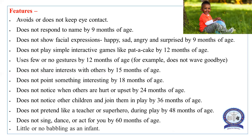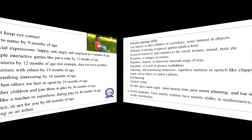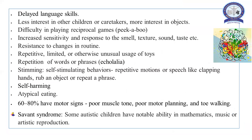By age 18 months, the child does not find or point to something of interest. By age two years, the child does not notice when others are hurt or upset. By age 36 months, the child does not notice other children or join them for play. By age 48 months, the child does not pretend to be a teacher or superhero during play. By age five years (60 months), the child cannot sing, dance, or act in drama. These are signs of autism, along with delayed language skills and less interest in other children, caretakers, or objects.